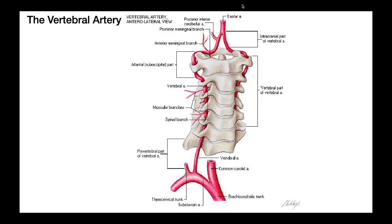The skull sits on top of the atlas — the superior facets of the atlas house the occipital condyles of the skull. The vertebral artery actually enters the skull, enters the cranium, so this region is the intracranial part. Very quickly after entering the cranium, the two vertebral arteries meet up and fuse. When the vertebral arteries fuse, they form what's called the basilar artery. The basilar artery is therefore a convergence, or fusion, of the two vertebral arteries, which means there is no left and right basilar artery — there is just the basilar artery.